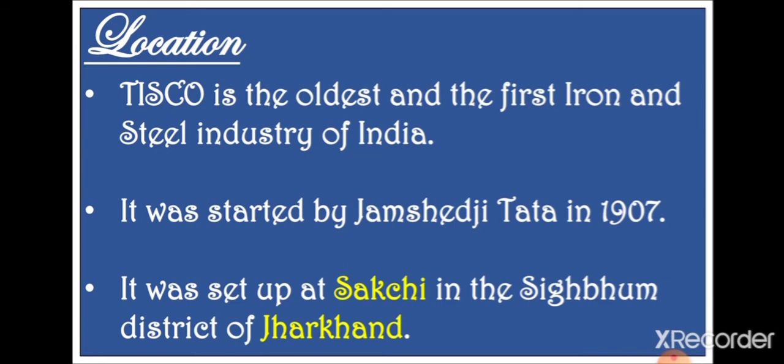Jamshedpur is a famous industrial region in Jharkhand. Since Tata Iron and Steel Industry is situated there, and since iron and steel industry is the feeder industry — or the basic industry — it provides raw material to other industries. Therefore, Jamshedpur became an industrial hub where lots of industries are established together, all because of the availability of iron and steel.